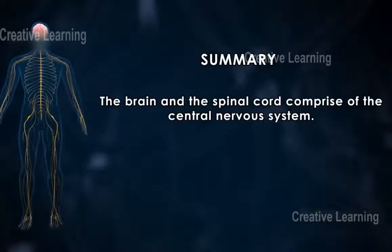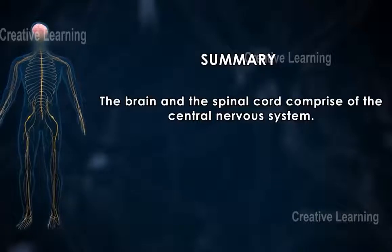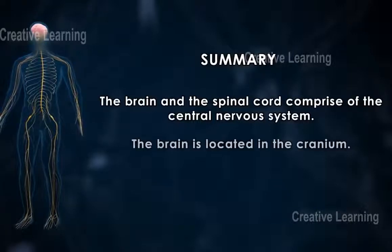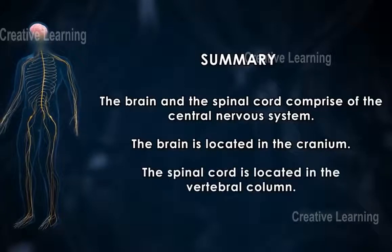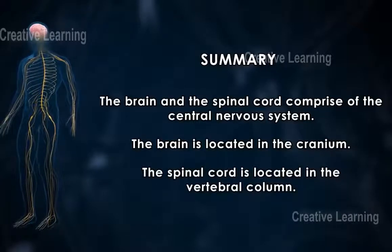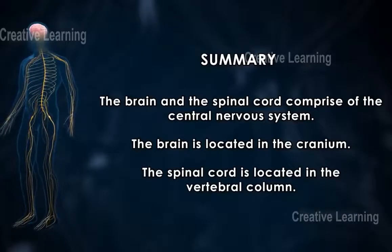Summary: The brain and the spinal cord comprise the central nervous system. The brain is located in the cranium. The spinal cord is located in the vertebral column.